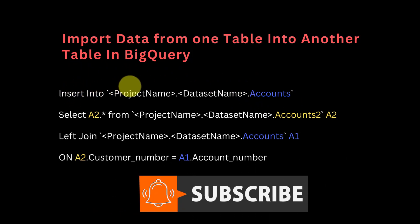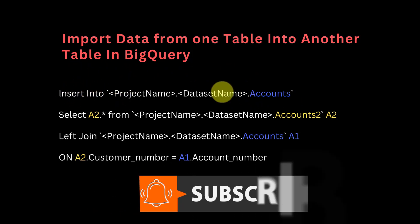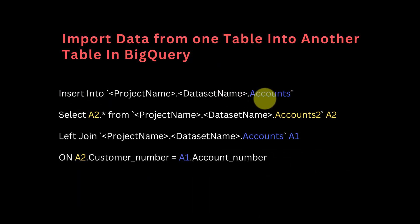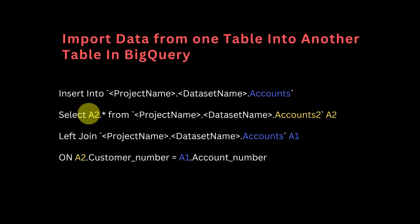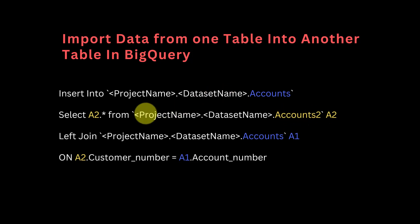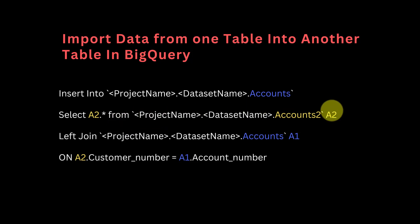This is how you can do it. You just have to write INSERT INTO and enter your project name, your dataset name, and then your table name — let's say 'accounts'. Then the next line of code is SELECT a2, which is the alias for your new accounts table, which exists inside of a query you imported — for example inside of a query — dot star. So you're importing everything from the new 'accounts2' table.